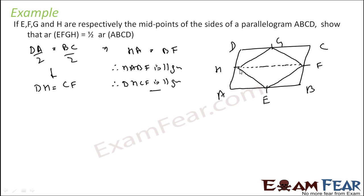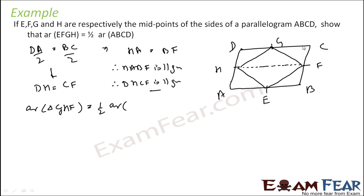First, break it. So area of triangle GHF — we got half of area of this particular parallelogram. We have done it the same way as HF, and the vertices, if you join them, they form a line parallel to the parallelogram. So it will be half of area of DHFC.